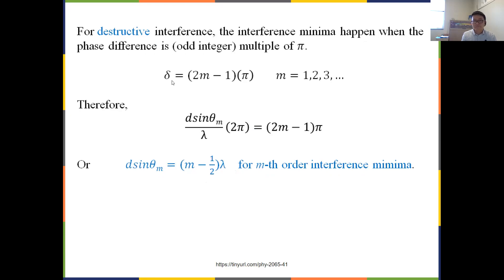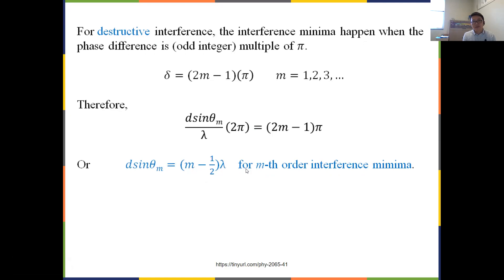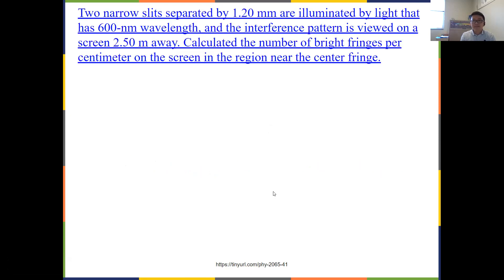For destructive interference (dark fringes), Δφ = (2m - 1)π, where m starts from 1, 2, 3. Working through the algebra, this gives d·sinθ = (m - ½)λ for m = 1, 2, 3. That is where you find the dark fringes on the screen — this is your interference minimum or destructive interference condition.